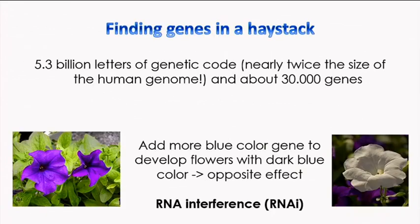You might know that the genomes of higher organisms are very large. For instance, for barley, it's almost twice as big as the size of the human genome, meaning you have about 30,000 genes. So how do you find genes which are involved only in plant-pathogen interactions?